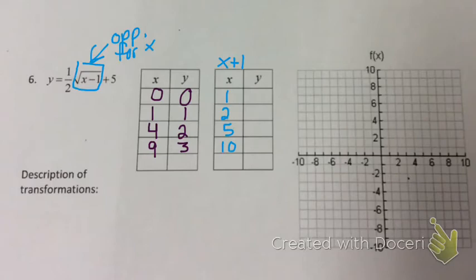Now I'm going to apply whatever is on my outside of my function to my y values. So, since I have a 1 half in front, it will be 1 half times whatever my y values are, plus 5.